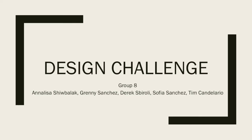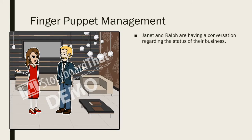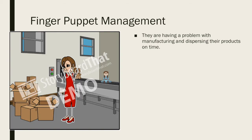This is design challenge for writing log 5 by group 8. Janet and Ralph are having a conversation regarding the status of their business. They are having a problem with manufacturing and dispersing their products on time.